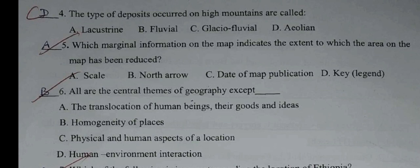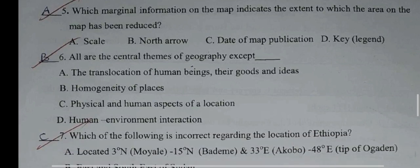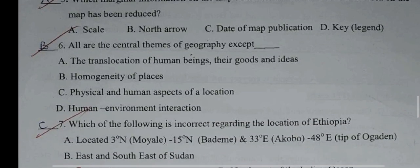Question number five: Which marginal information on the map indicates the extent to which the area on the map has been reduced? A: Scale. B: North arrow. C: Date of map publication. D: Key or legend. The correct answer is A.